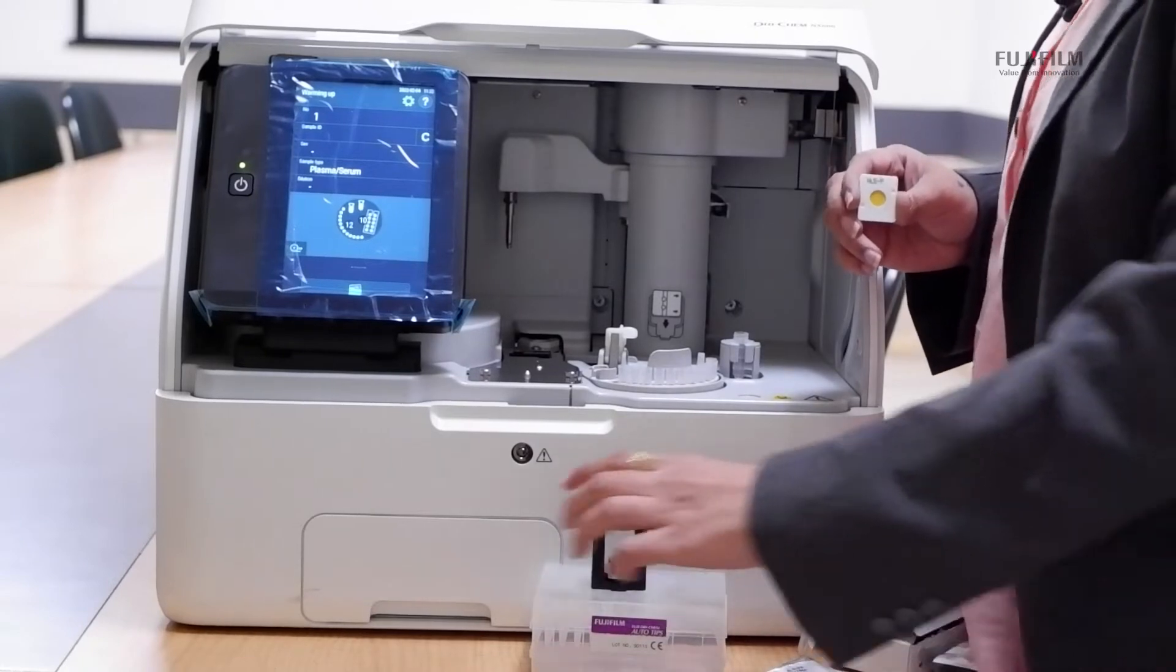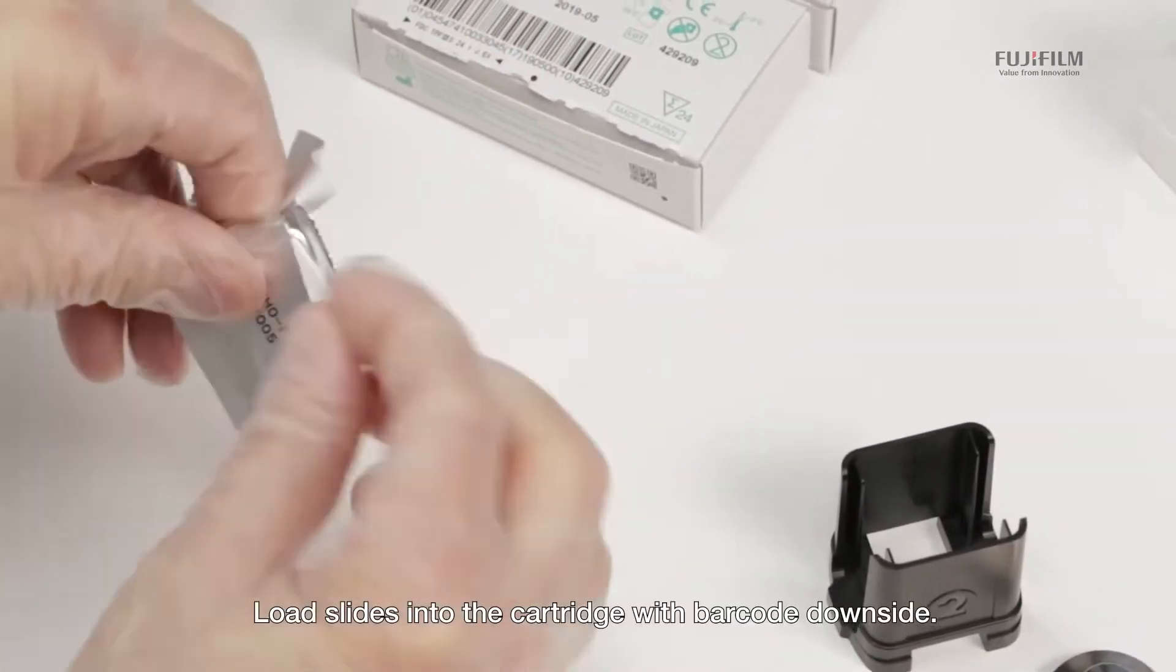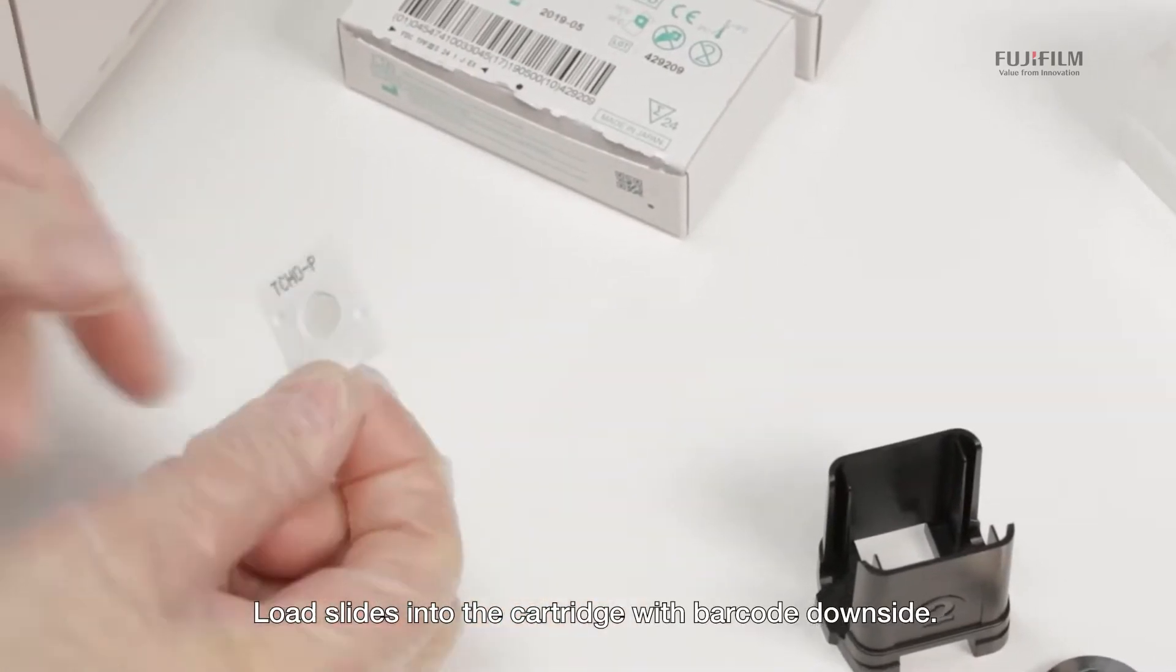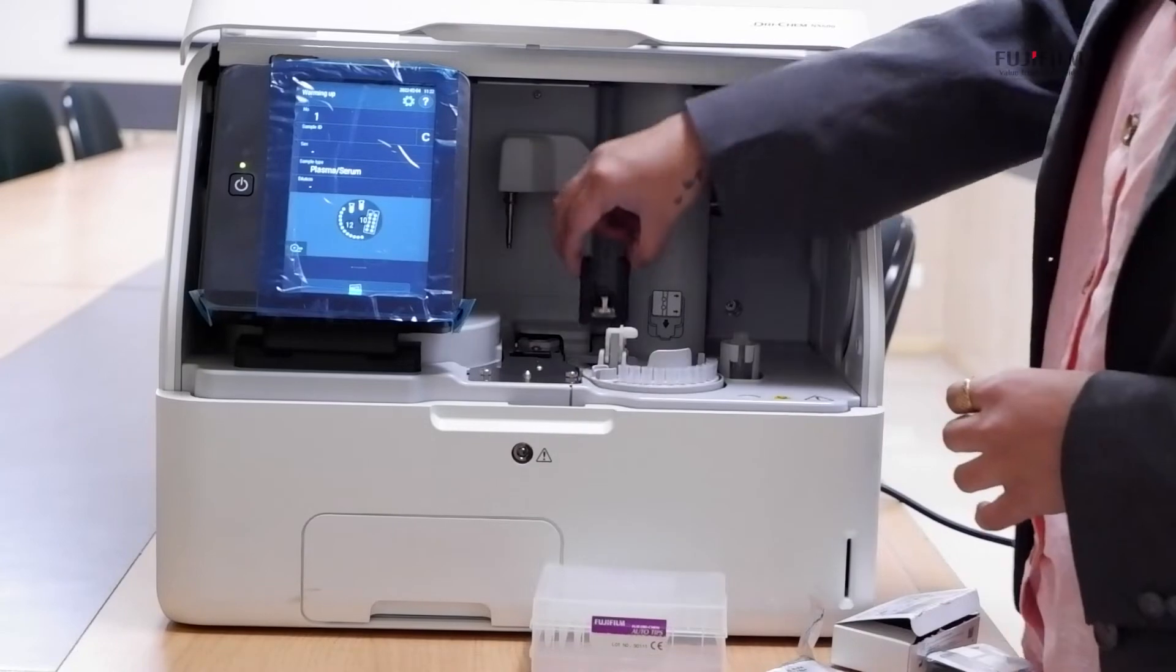This is the slide rack and we place the slides in the rack with barcode facing towards the downward direction. And then, we keep the slide rack in the equipment.